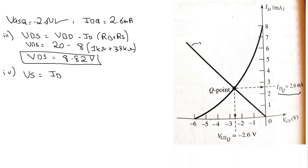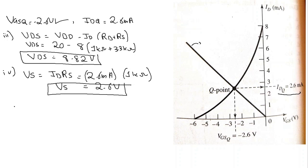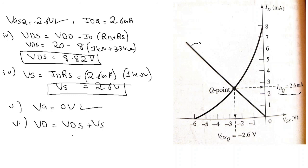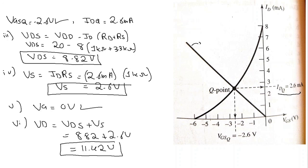Next, VS = ID · RS = 2.6 mA × 1 kΩ = 2.6 volts. Since there is no gate resistor to ground with a voltage divider here, VG = 0 volts. Finally, VD = VDS + VS = 8.82 + 2.6 = 11.42 volts. We have now found all the unknowns.